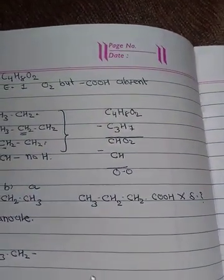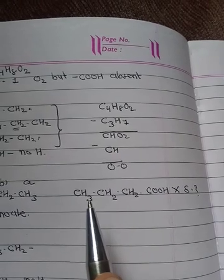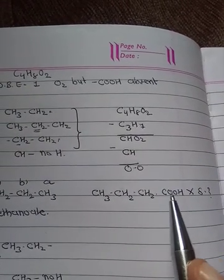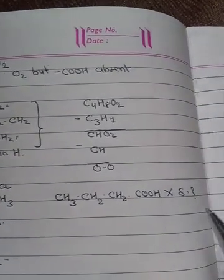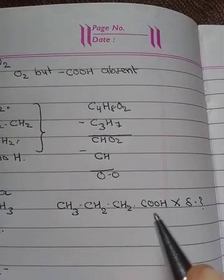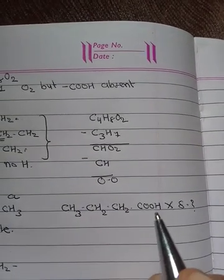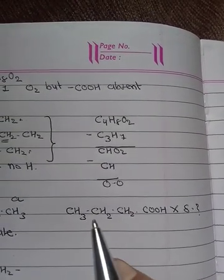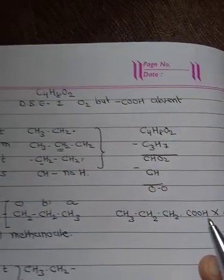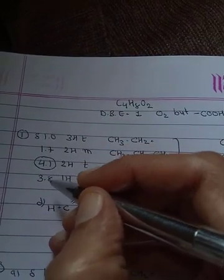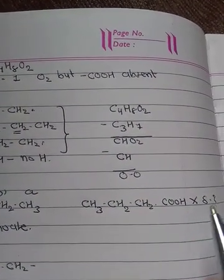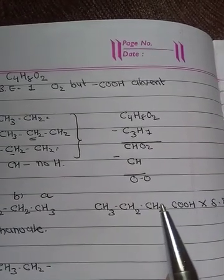If you write here COOH group, though the data matches because 1H singlet is also justified, the problem is the delta value of acid group is not given (10 to 12). So most students make a mistake here. They normally write this structure. But you should keep in mind that none of the delta values is in the range of 10 to 12, which is the delta of carboxylic acid. That's why this structure is wrong.